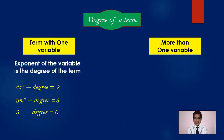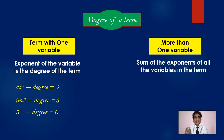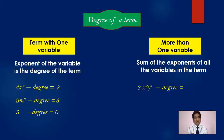Now let us consider the second case where you have more than one variable. In that case, you have to find the sum of all the exponents of the variables. For example, in 3x²y³ there are two variables x and y. The exponent of x is 2 and the exponent of y is 3, so the degree is 2 plus 3, which is 5.